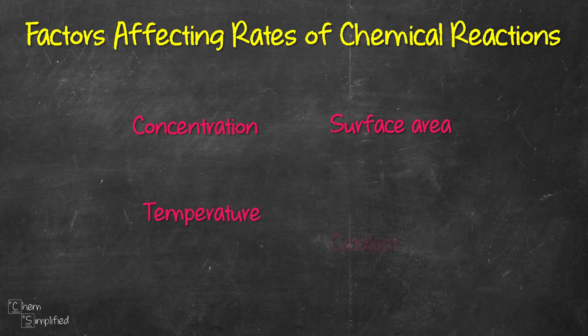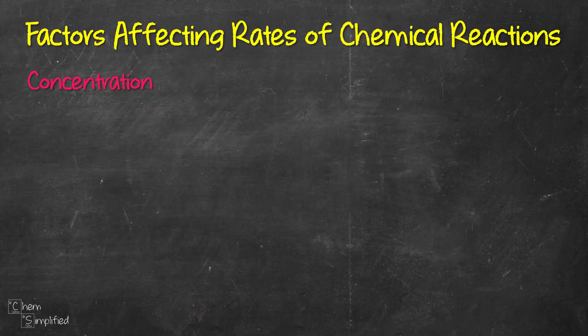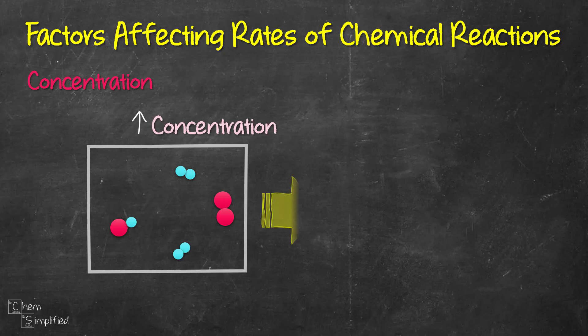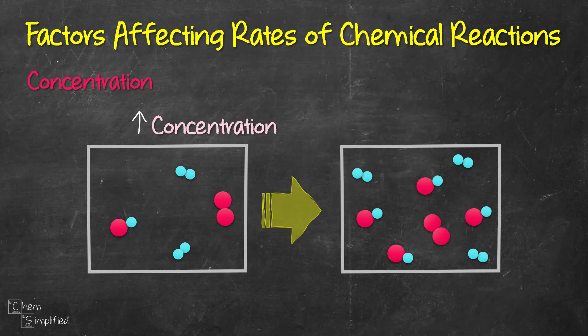There are basically four factors: concentration, surface area, temperature, and catalysts. So we're going to start with the first one, which is the concentration of the reactants. Let's say we start with this amount of reactants and we get some reaction happening. Now if we were to increase the concentration of the reactants, that means we're going to have more blue and red reactants.